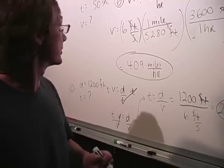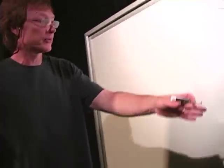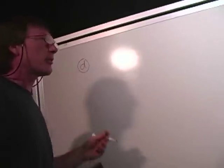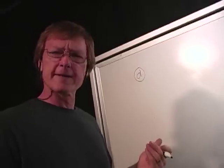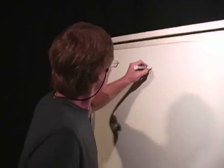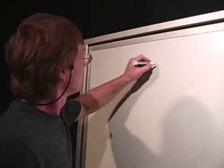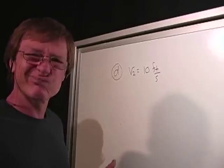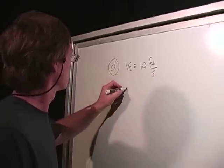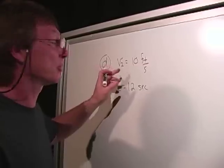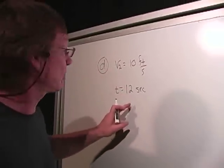Now what about an acceleration? Let's try that. That was C, so let's try D. Let's say I'm going to accelerate. I'm moving at 6 feet per second. But I'm going to accelerate to 10 feet per second. So I'm going to have a new velocity, V2 of 10 feet per second. And it's going to take me 12 seconds to do that. To speed up, to go from 6 feet per second to 10 feet per second, take me 12 seconds. And I want to know, what's the acceleration?